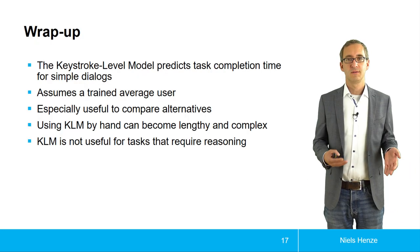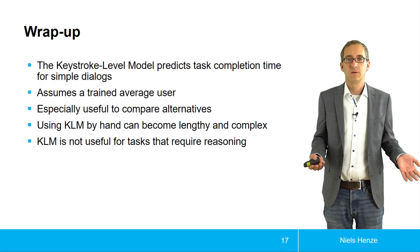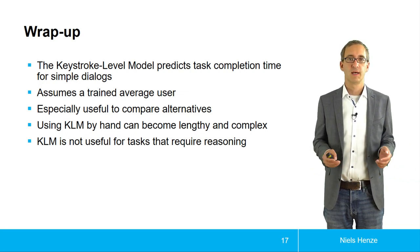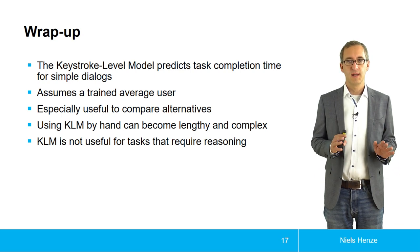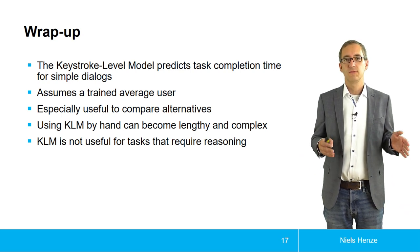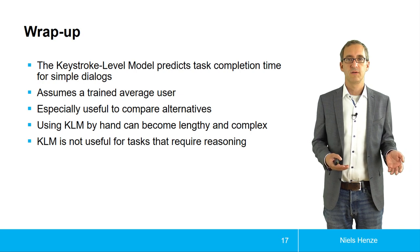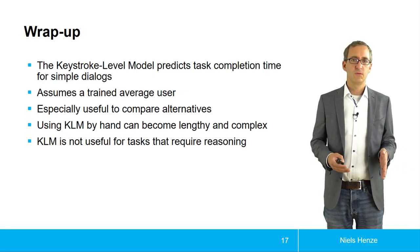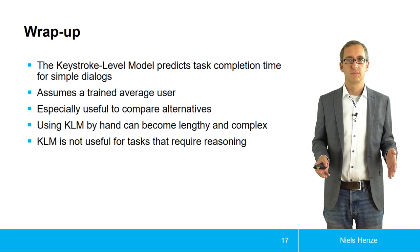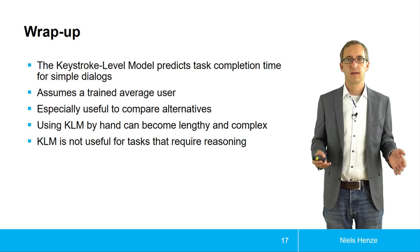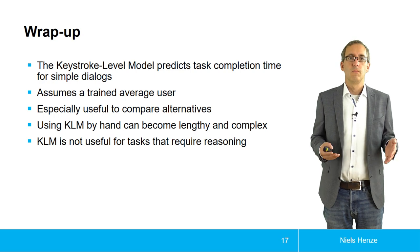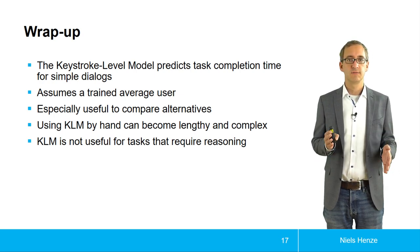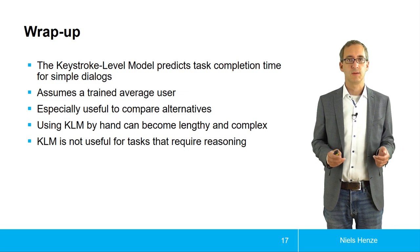To wrap up, the keystroke level model, or KLM, predicts task completion times for simple dialogues. It assumes an average trained user, so if you have outliers, these are not covered by KLM. It's especially useful to compare different alternatives. The absolute seconds that come out of KLM might not be super precise, but in relation to each other, if you compare two interfaces, they can be very useful.